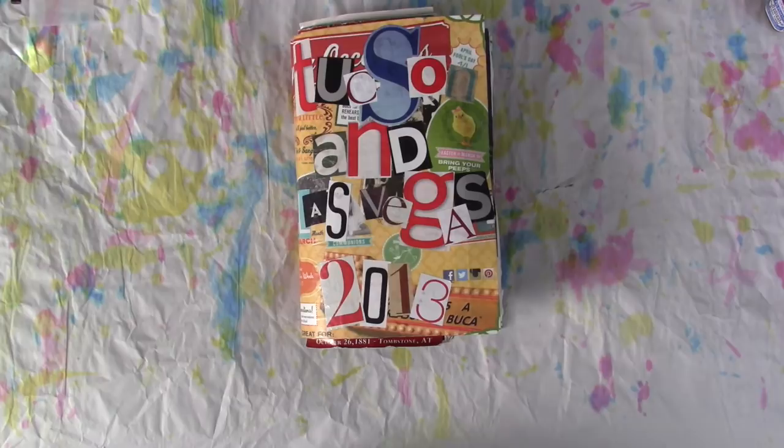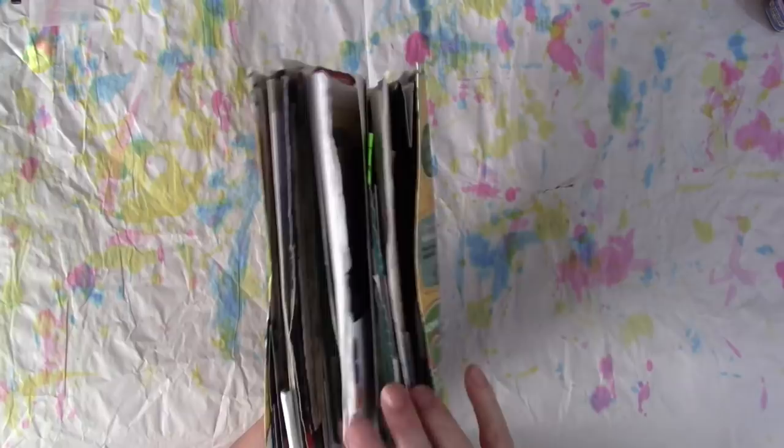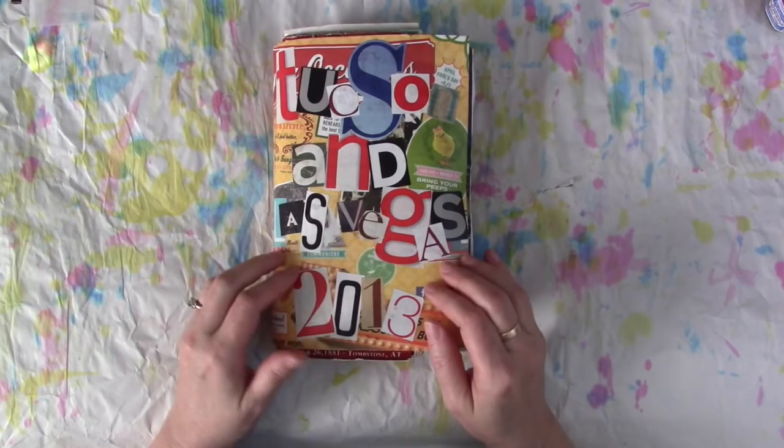I have a story to share. Once upon a time, in 2013, we took a family trip to Tucson and Las Vegas. Pretty sure I've done a flip through of this journal. I'll find it and link to it either above or below or both.